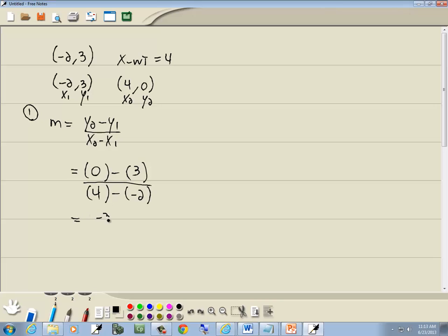0 minus 3 is negative 3. Negative negative gives us positive, so we've got 4 plus 2. So we've got negative 3 over 6, which reduces to negative 1 half.